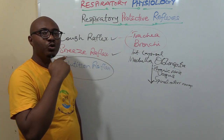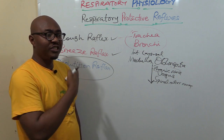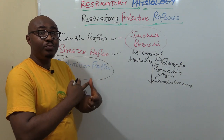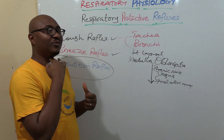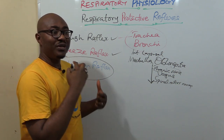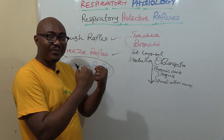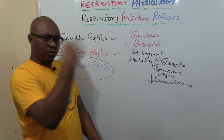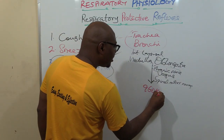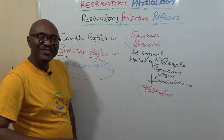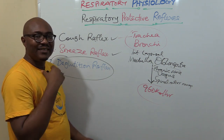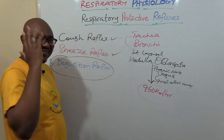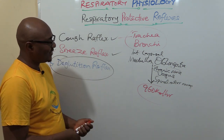Then there is an immediate closure of the glottis, which closes the larynx and the windpipe. This builds up high intrapleural pressure in the lungs. After that, the glottis opens and there is explosive expulsion of air that can reach up to 960 km per hour — a very forceful ejection that expels the foreign agent.